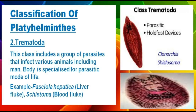The second class is Trematoda. This class includes a group of parasites that infect various animals including humans. The body is specialized for a parasitic mode of life. Its examples include liver fluke and blood fluke.